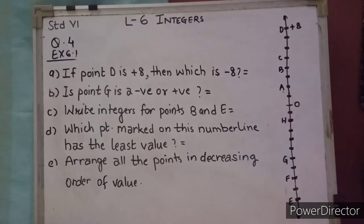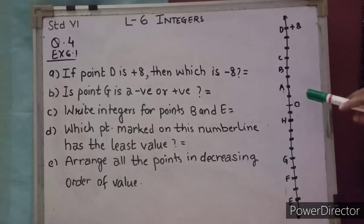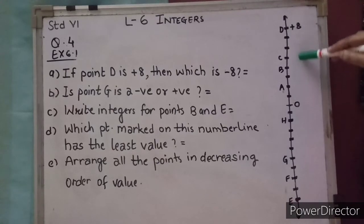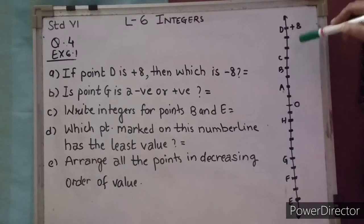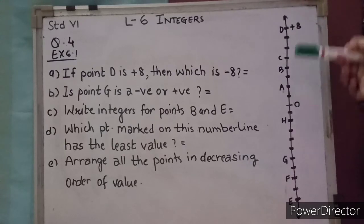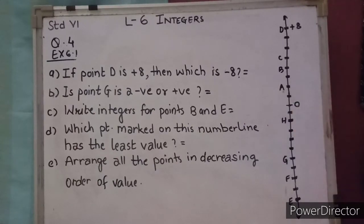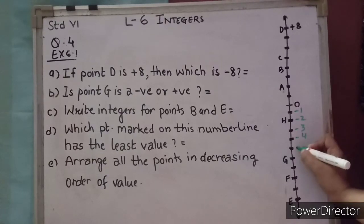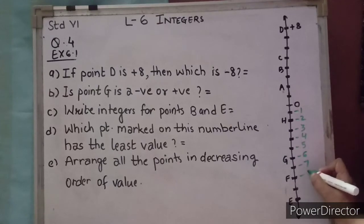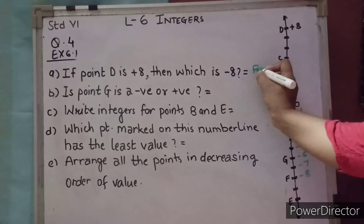Below 0, all numbers are negative: minus 1, minus 2, minus 3, minus 4, minus 5, minus 6, minus 7, minus 8. So which point will be minus 8? Counting down 8 positions from 0, it will be point F. Numbers 1 through 8 above are positive, and minus 8, minus 9, minus 10 are below.